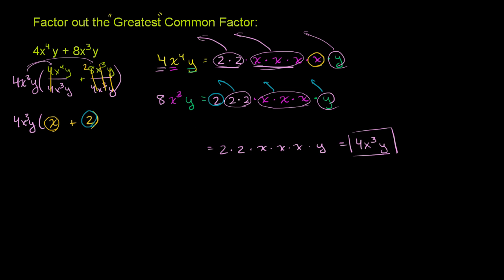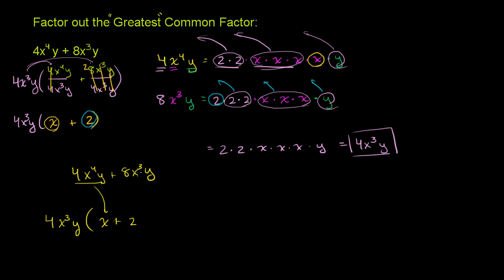In general, you don't always have to go through this whole process. You could say: the largest number divisible into both 4 and 8 is 4, so factor out a 4. The largest power of x divisible into x to the fourth and x to the third is x to the third. And the largest factor of y common to both is just y. So factor out 4x to the third y. Taking 4 out of 4 leaves 1, x to the third out of x to the fourth leaves x, y out of y leaves 1 — so the first term becomes x. Taking 4 out of 8 leaves 2, x to the third out of x to the third leaves 1, y out of y leaves 1 — so the second term is 2. Result: x plus 2. Eventually you'll just do this in your head a little bit faster.